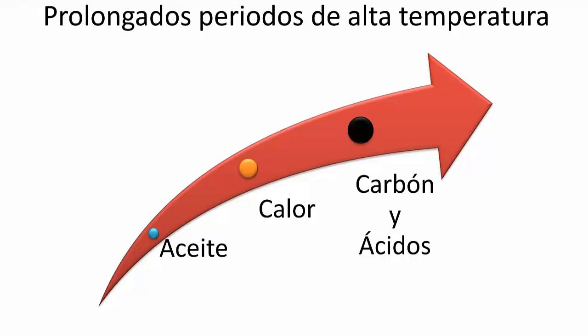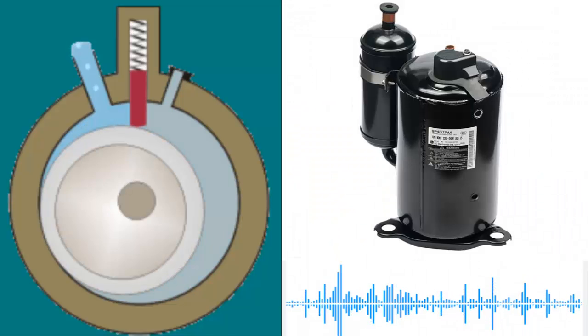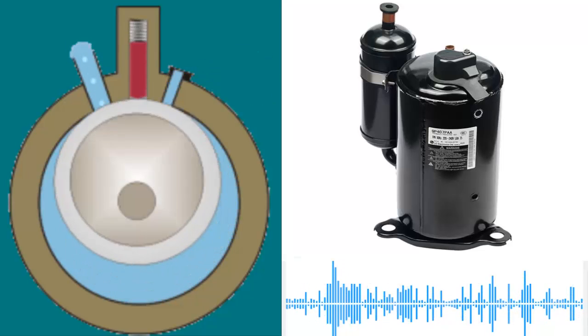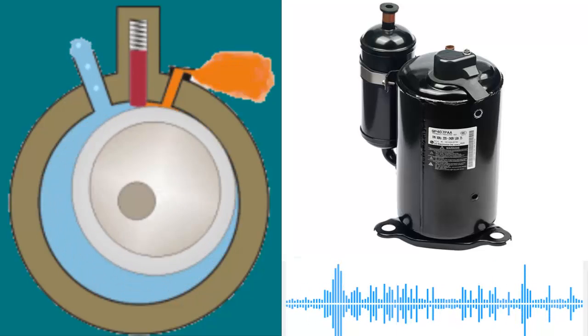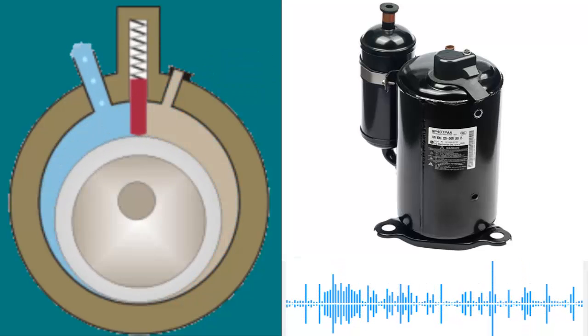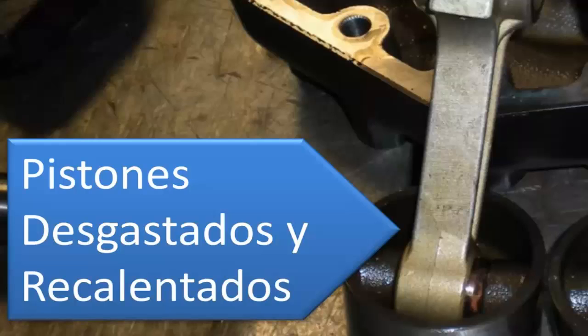2. Compressor Overheating. If the compressor overheats internally, the oil can burn, resulting in the generation of carbon particles that darken the oil.